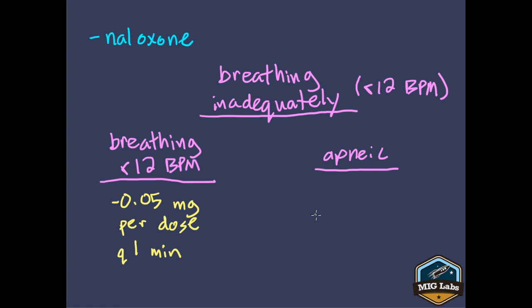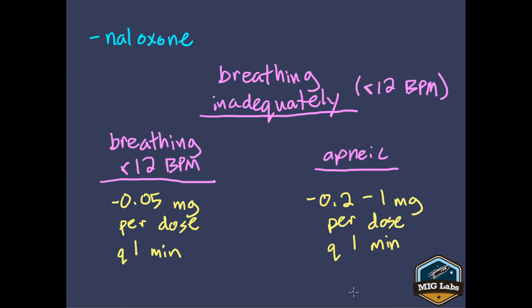The second category is patients who are apneic — not breathing at all. Here we want to be a little more aggressive. We're willing to accept a slightly higher risk of overshooting because the patient is in a much worse state. The protocol is similar but with a higher dose: 0.2 up to 1 mg per dose, given every minute until you get the desired effect.